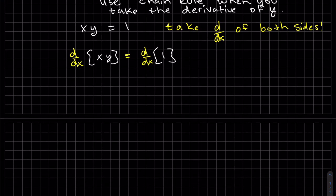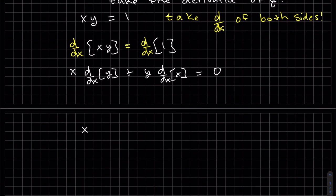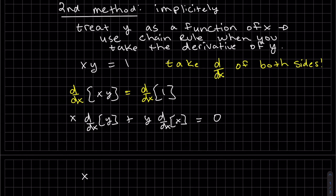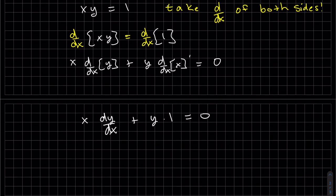So on the left we use the product rule, and on the right it's the derivative of a constant which is zero. Again, we're going to take the derivative of y in terms of x, so we chain rule it. You can see d/dx of y is dy/dx, or you can think of it as one times dy/dx, however you want to think about it.